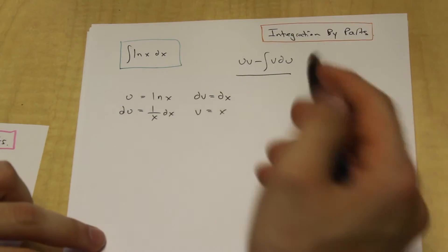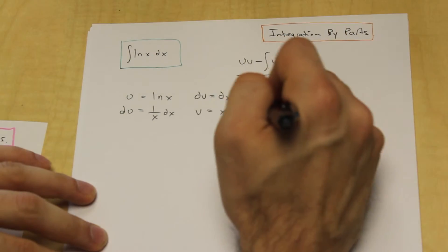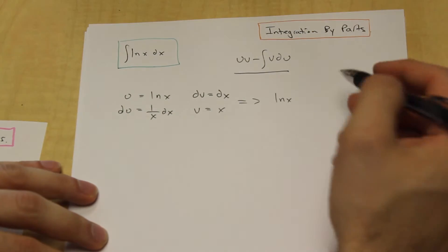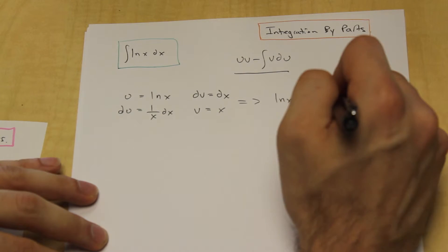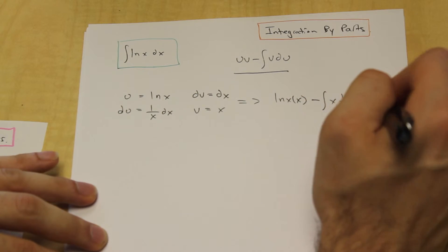All right, so next step, we're going to go ahead and plug these variables into our formula. So let's move over here. And we have u, which is ln x, we have v, which is x, minus the integration of v, which is x, and du, which is 1 over x dx.